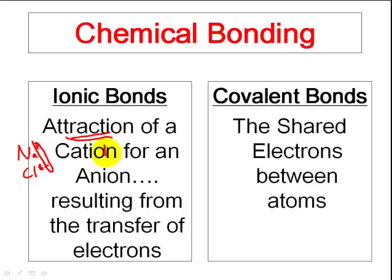Cations were positive and anions were negative, and because one was positive and one was negative, there was an attraction. That is what the ionic bond was — literally the attractive forces between positive and negative ions that resulted from the transfer of electrons. So ionic bonds were the attraction of a cation for an anion resulting from the transfer of electrons.